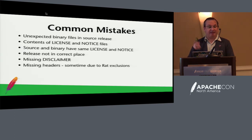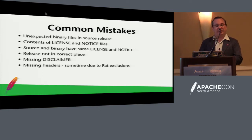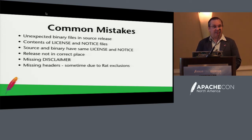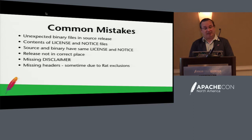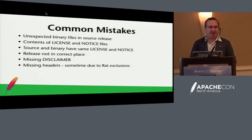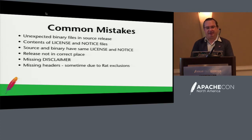Common mistakes: unexpected binary files in source releases; contents of license and notice files where source and binary have the same files when they should be different; not putting the release in the correct place — people were sticking them in home directories or Maven instead of the proper release area. Missing disclaimer happens quite a bit too, surprisingly. Missing headers: that's not so common, but be careful with RAT exclusions and make sure they're not too wide. Just because it's testing code, it still has to be licensed correctly.